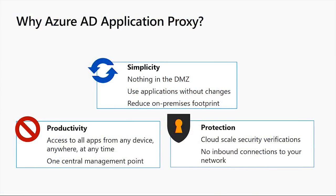we're able to reduce an on-premises footprint. When you look at productivity, application proxy is allowing access to all applications from any device anywhere at any time, and by providing management for application proxy alongside all of your other Azure Active Directory applications, it's one central management point. When you look at protection, it's bringing the cloud-scale security verifications of Azure Active Directory to all of your on-premises resources, and there are no inbound connections required to your network.